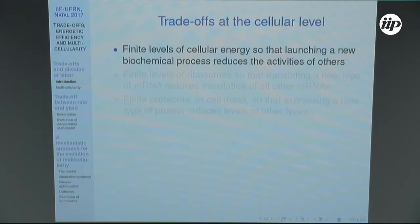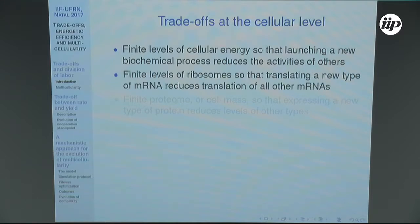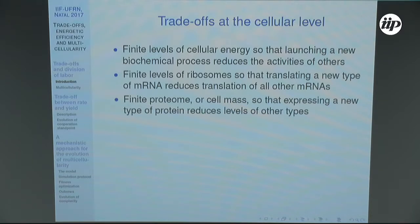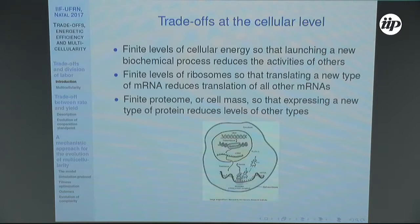We also have trade-offs at the cellular level because energy is finite. Every biochemical process requires energy, and the number of ribosomes is also finite. If you over-express a given protein, other proteins are under-expressed. There is also a limit of space — the cell has a maximum size — so all these constraints impose limits on the processes carried out inside the cell.